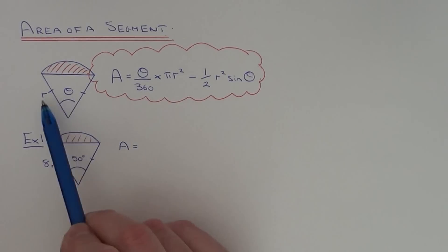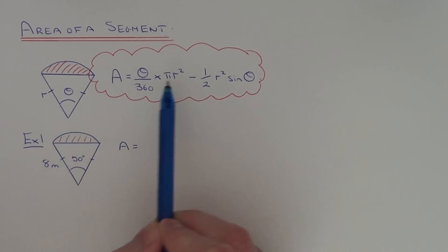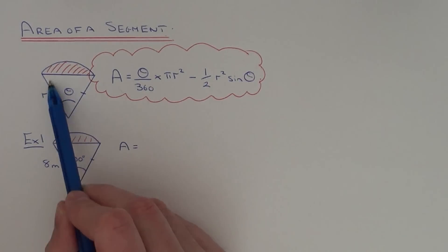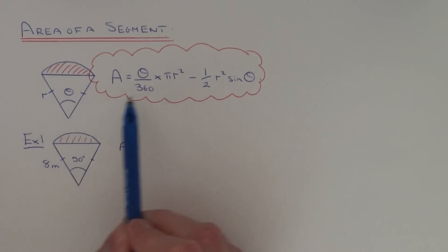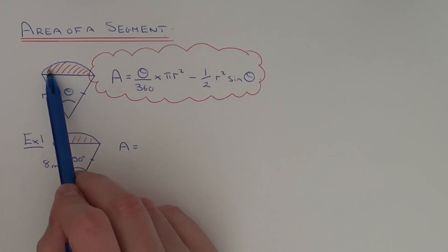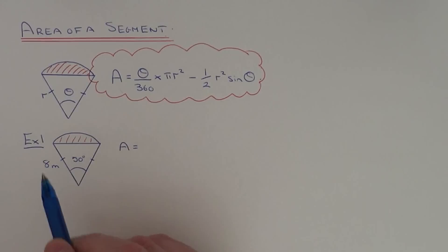This bit of the formula here gives you the area of the whole sector, and this bit of the formula gives you the area of the triangle. So if you find the difference between the sector and the triangle this will leave you with the area of the segment.